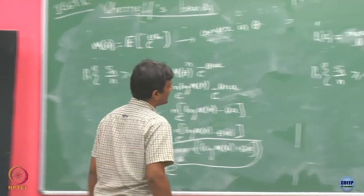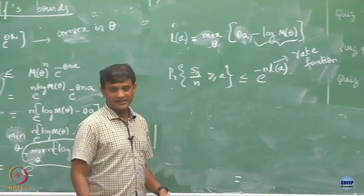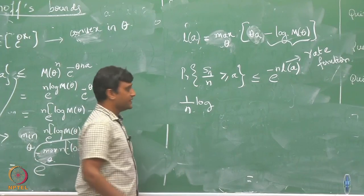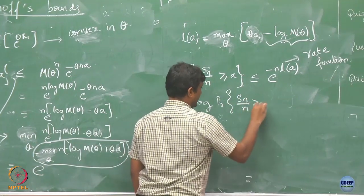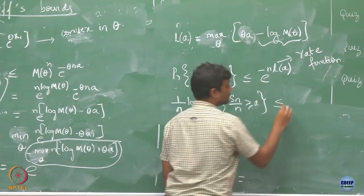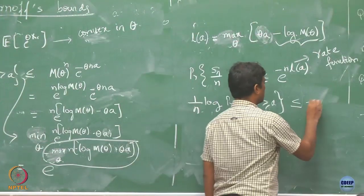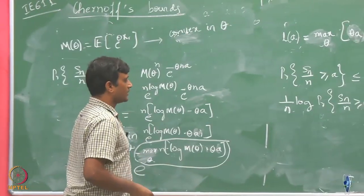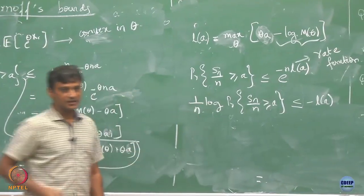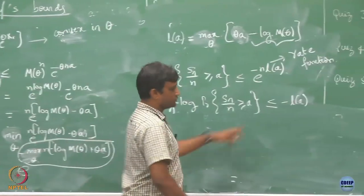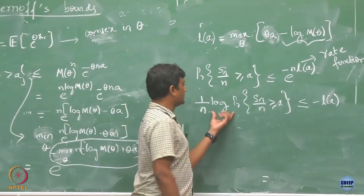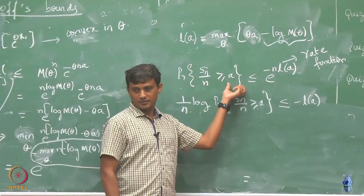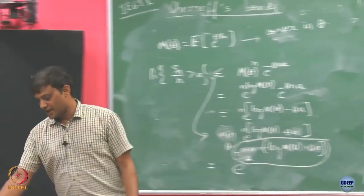Taking log on both sides and normalizing, the quantity (1/n) log P(SN/n >= A) is upper bounded by minus L(A). This is called the Chernoff bound. It so happens that the Chernoff bound is actually tight.